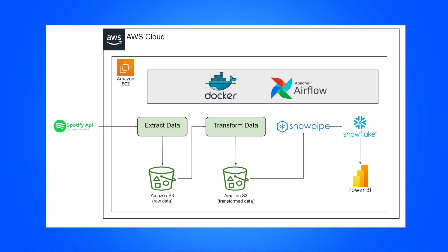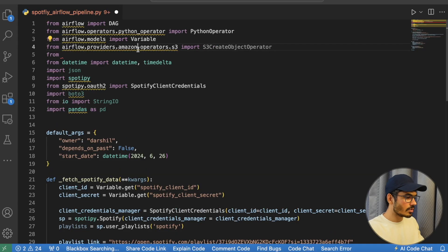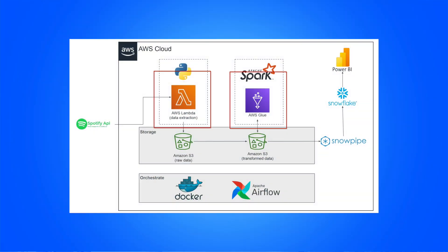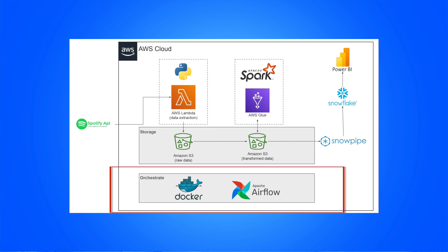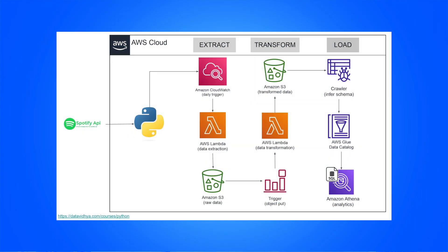In the first approach, we'll completely use Apache Airflow to build the DAG. In the second approach, we'll keep services like Lambda and Apache Spark as-is, but use Apache Airflow just to orchestrate them — executing different things in the proper sequence. I've also added the Spotify data pipeline project from the Python course as a reference, so even if you're starting fresh from this Airflow course, you'll have that context available.